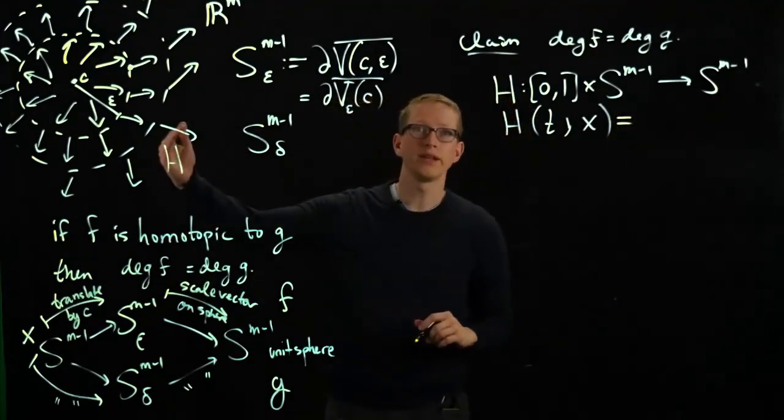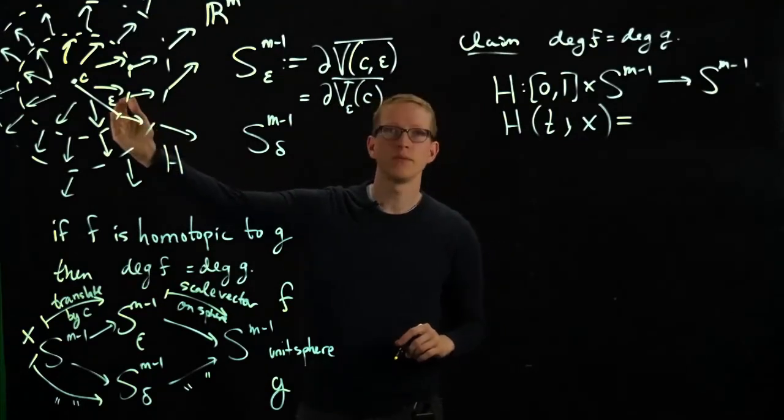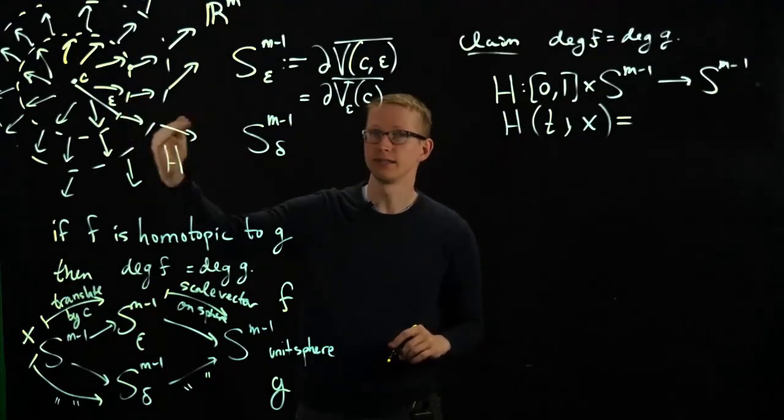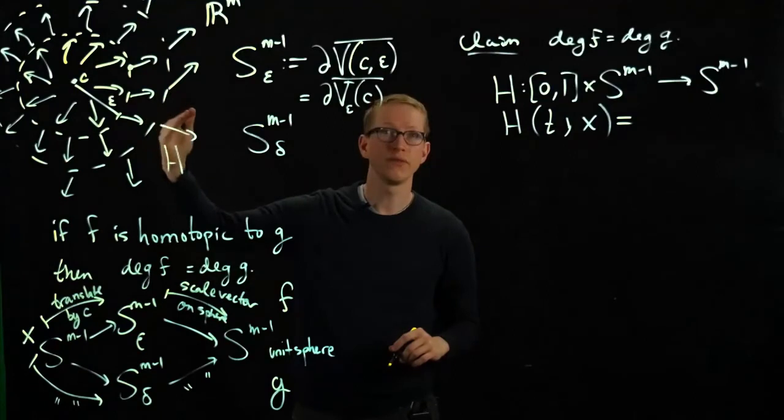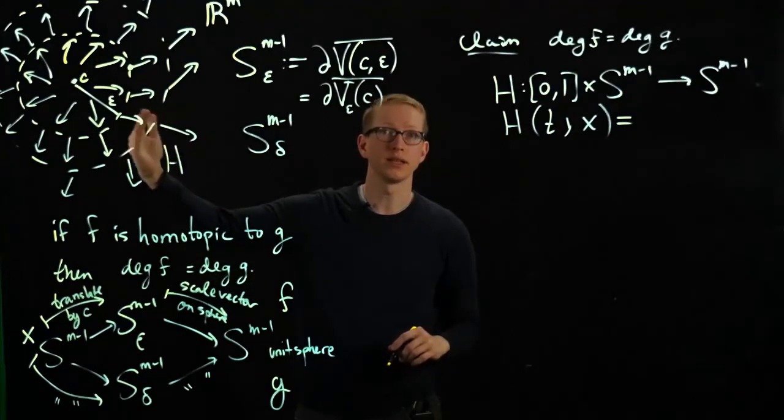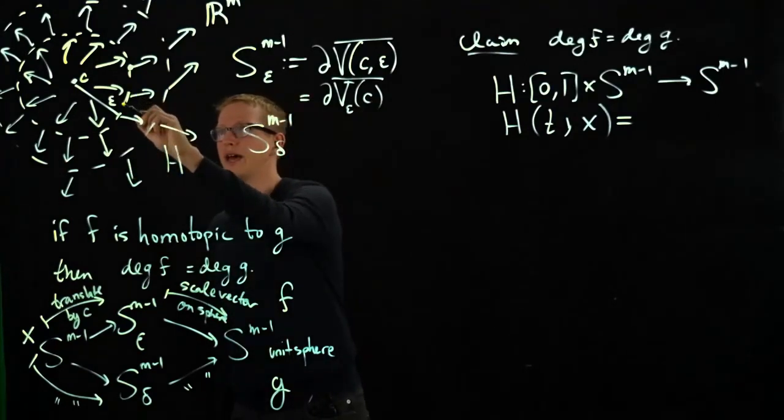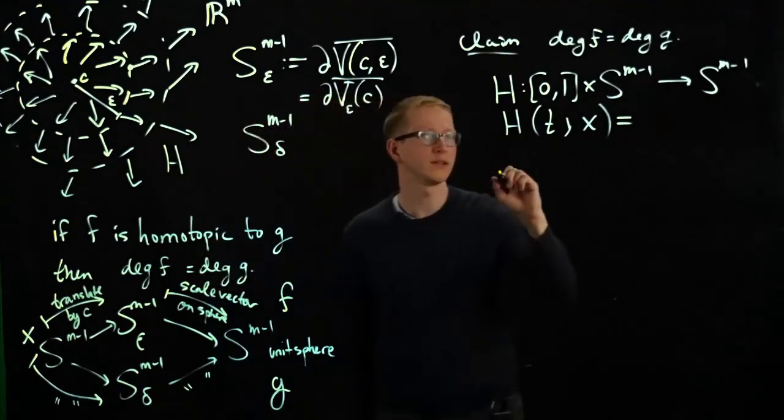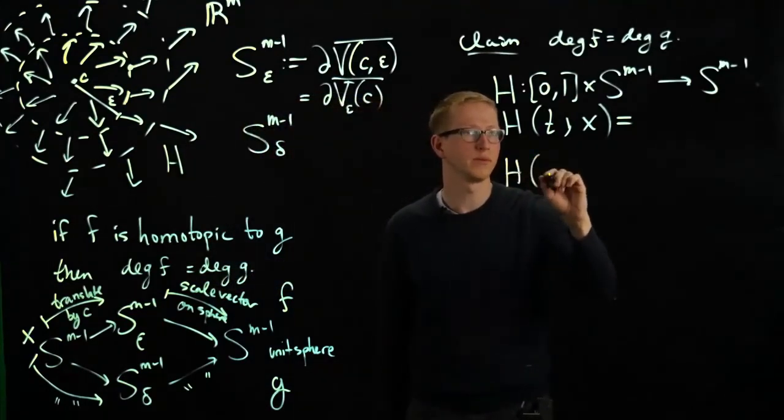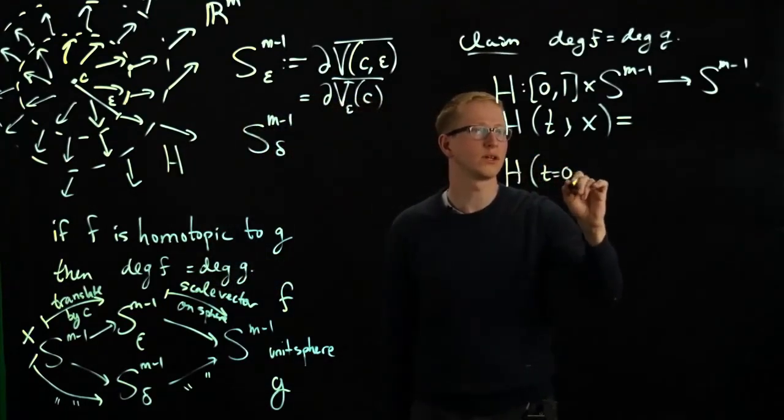So at every point, at every instant of time between epsilon and delta, I have a sphere of some radius between epsilon and delta. So all we're doing is, at epsilon equals zero, we restrict here. So before I write the... t equals zero at x, we're just going to get f of x.